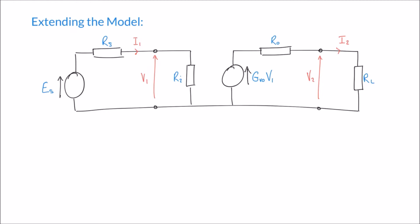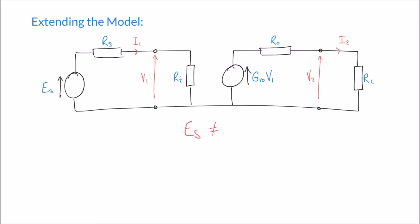Why is V1 not the same as ES? Looking at the left-hand segment of the circuit, we can see that we've formed a potential divider. ES is going to be split between RS and Ri — that voltage is going to be divided. So only the voltage dropped across Ri will be V1; the rest will be dropped across RS. That's why it's important to make Ri as large as possible — we want as much of ES to be dropped across Ri as possible, so V1 is as big as ES.